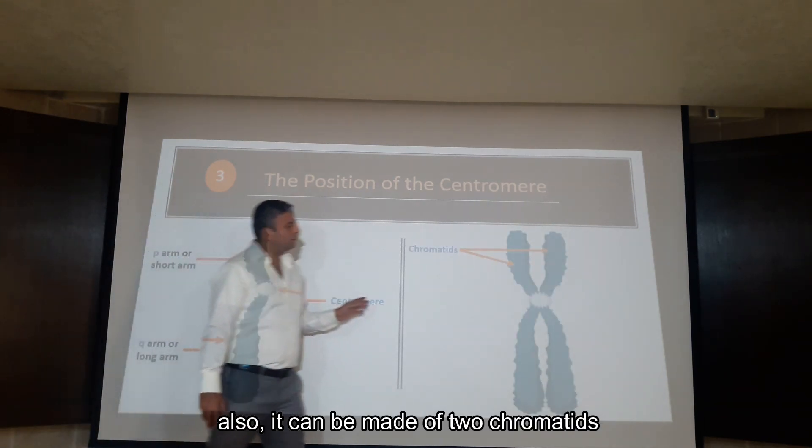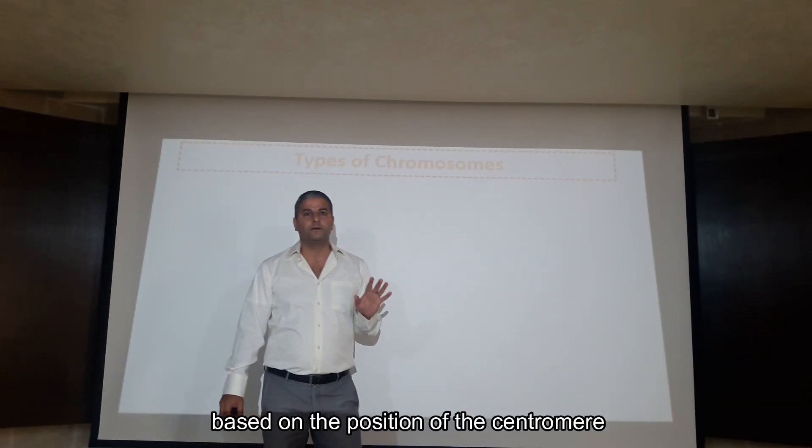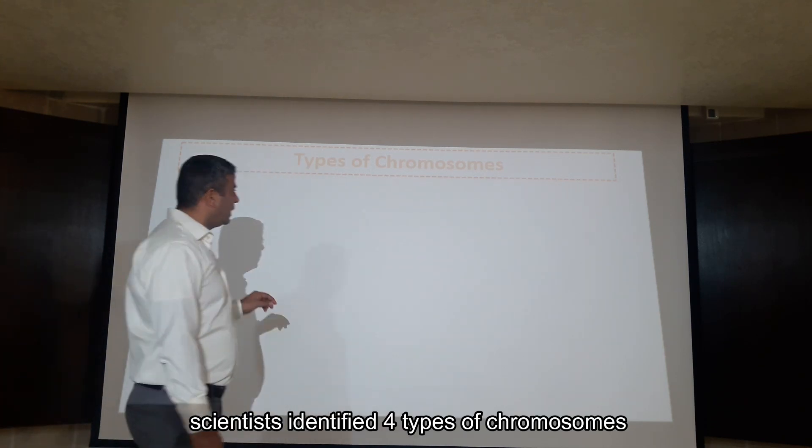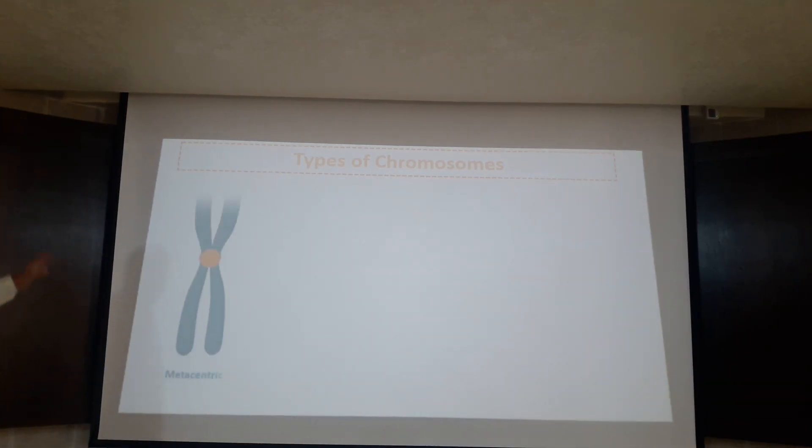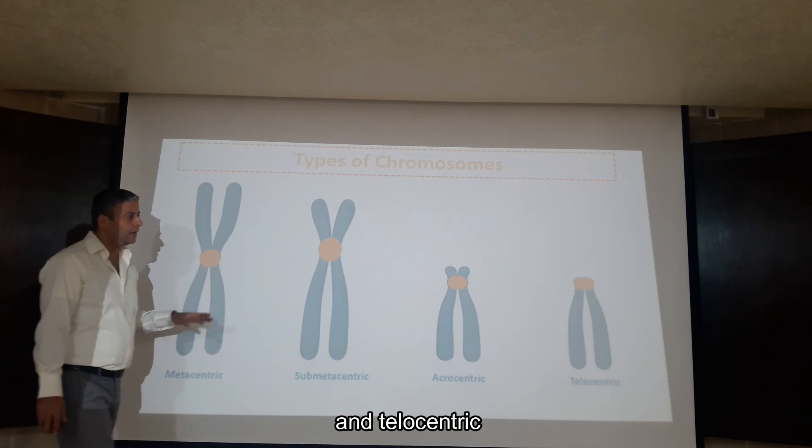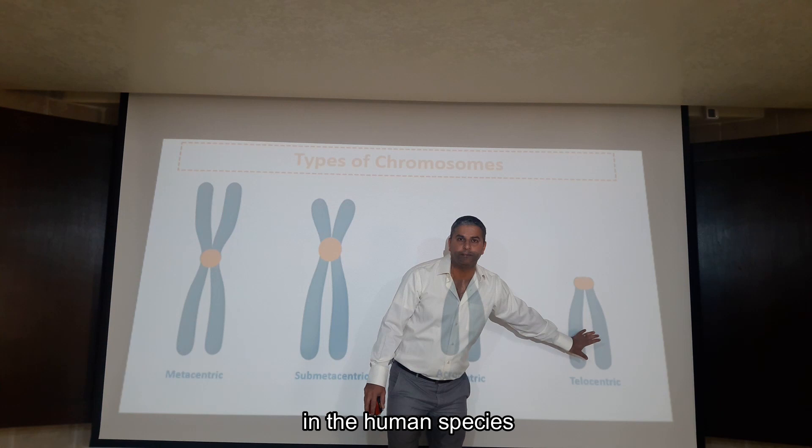it can be made of two chromatids joined with a centromere. Based on the position of the centromere, scientists identify four types of chromosomes: metacentric chromosome, submetacentric, acrocentric and telocentric. This last one is not found in the human species.